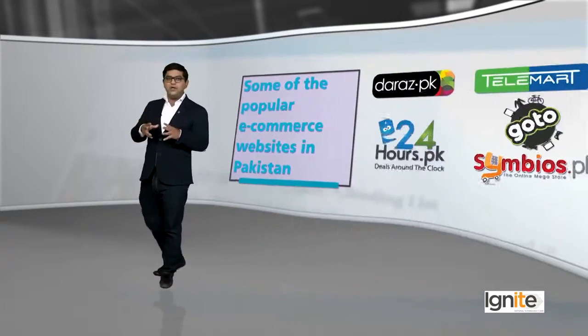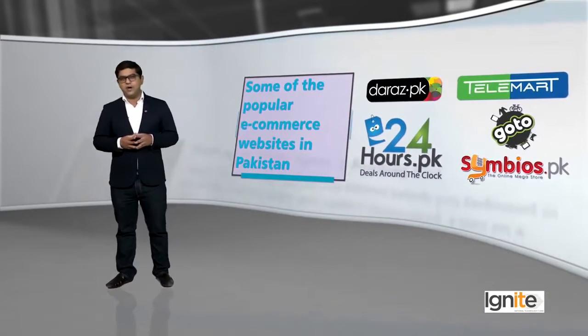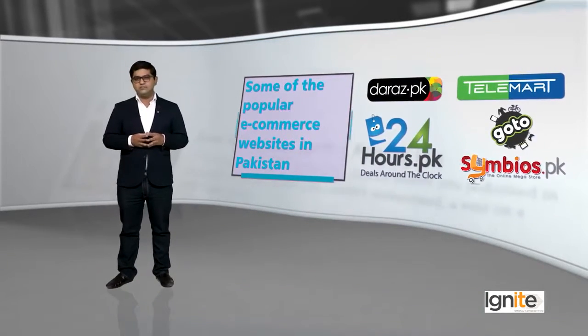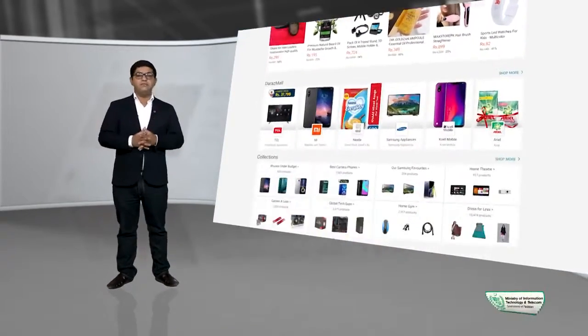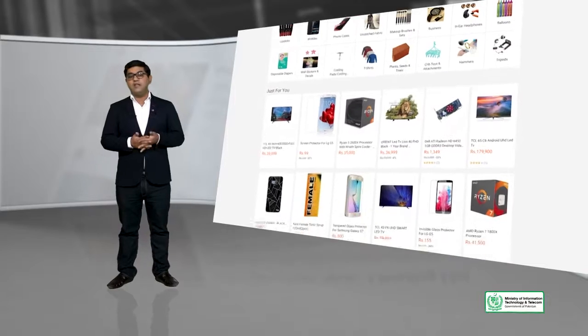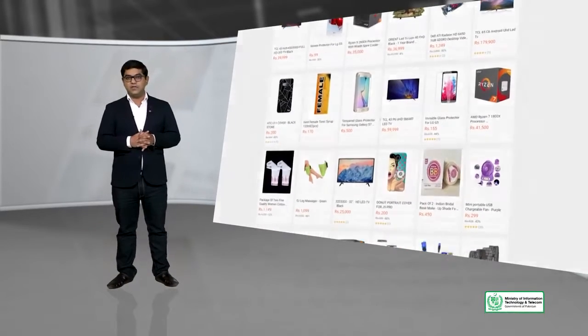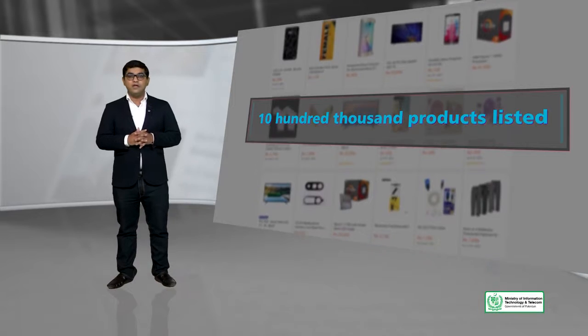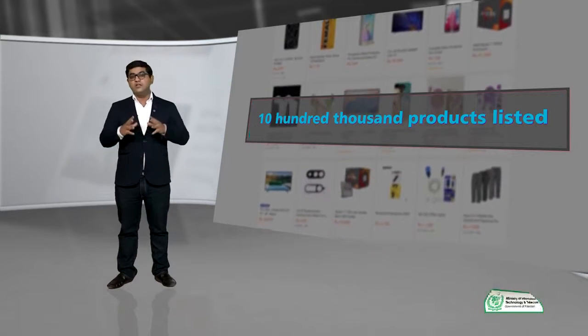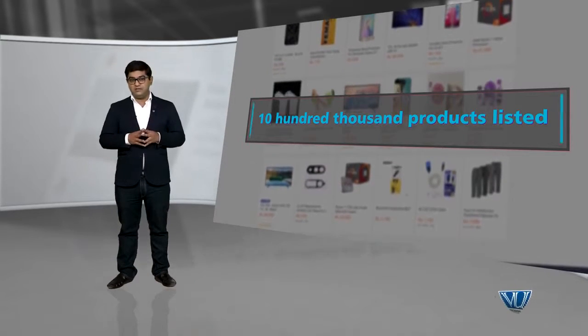Yeh kuch cheezein hain jinka aapne khyal rakhna hain. Aur saath hi saath, let's take a few examples of some of the popular e-commerce websites in Pakistan. Ek usmein se example hain Daraz — Daraz ka naam shahid aapne bahut suna. Daraz ke paas they have more than one hundred thousand products listed.